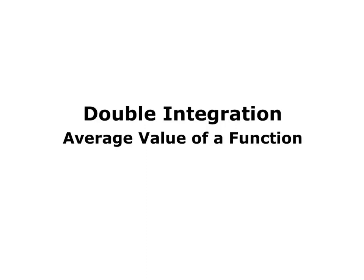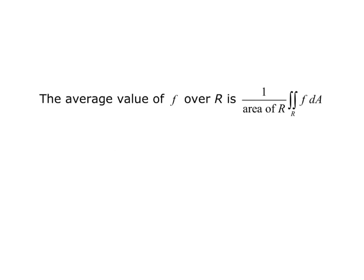This video is about using double integration to find the average value of a function. The average value of f over region R is one divided by the area of R times the double integral over R of f dA.